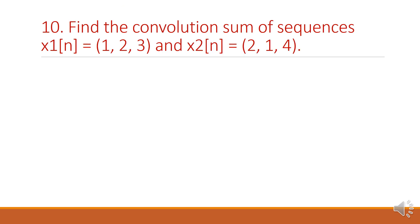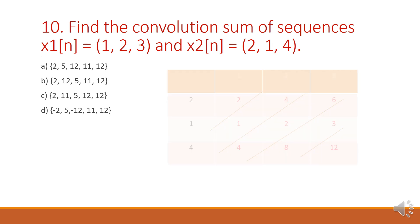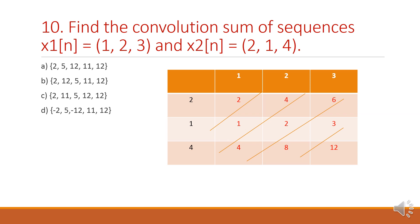Next problem: find the convolution sum of the sequences X1 of n = {1, 2, 3} and X2 of n = {2, 1, 4}. We solve this using the tabulation method. Cross multiply: 2×1=2, 2×2=4, 2×3=6, 1×1=1, 1×2=2, 1×3=3, 4×1=4, 4×2=8, 4×3=12. Adding diagonally: first is 2; second is 4+1=5; third is 6+2+4=12; fourth is 8+3=11; fifth is 12. The answer is option A.